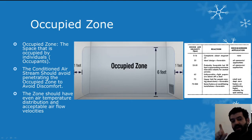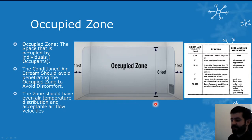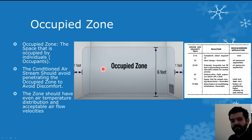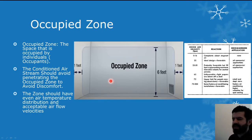As per standards, the occupied zone has been defined with regard to specific parameters within the space. Looking at the picture in front of us, the occupied zone starts from the floor level all the way to six feet above the floor — that's the maximum height. We also have a one-foot clearance between each side wall within the room. This space is essentially the occupied zone in which individuals are going to be present.